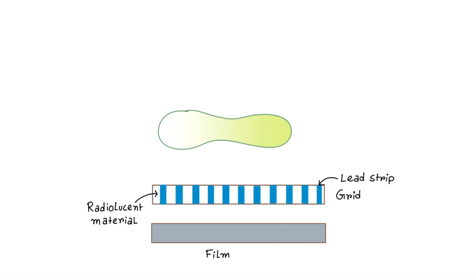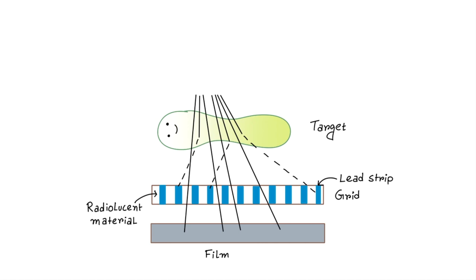Now after penetrating the target object, primary beams pass through this small gap between the lead strips and fall on the radiographic film. However, the scattered photons move obliquely and strike the lead strips at an angle and get absorbed by them.